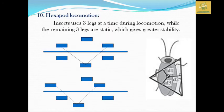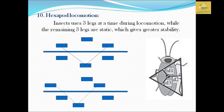The next is hexapod locomotion. We have a balance between insects due to their six legs. There is static movement and locomotion stability. The location is stable, meaning all insects achieve stable locomotion, which is one reason they are successful.